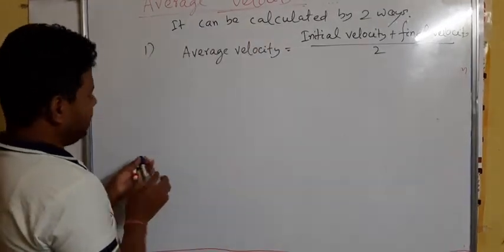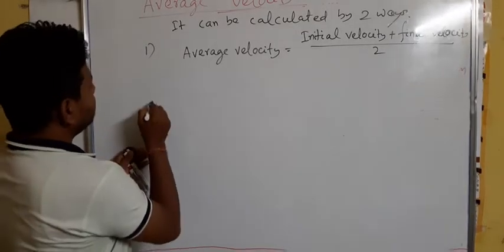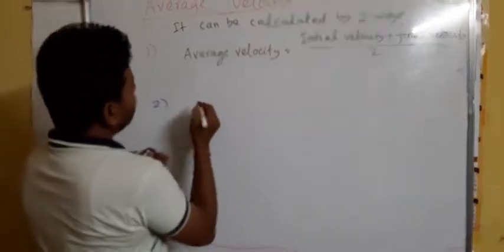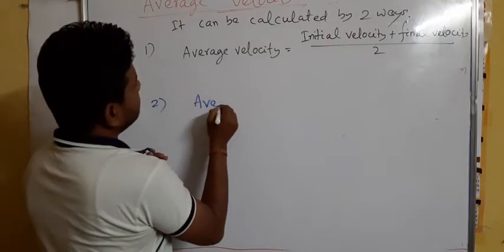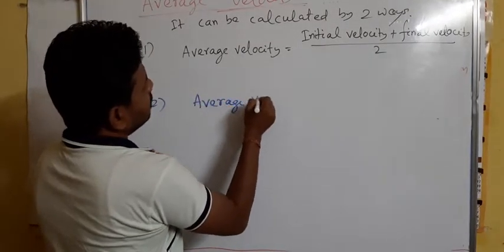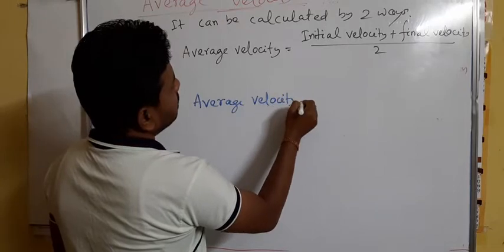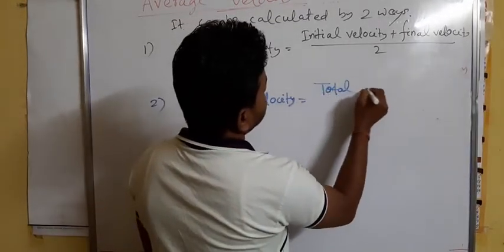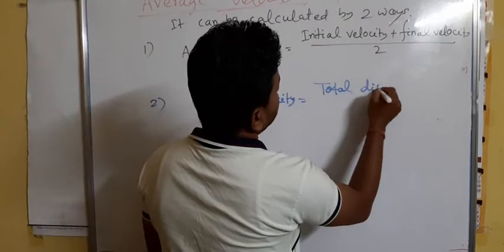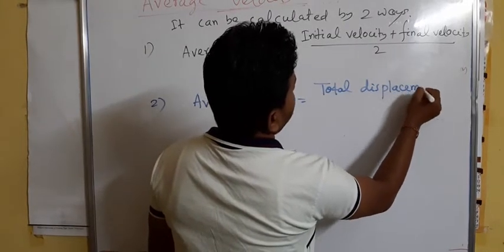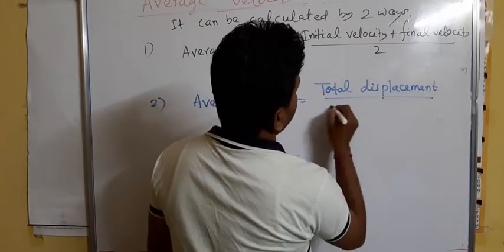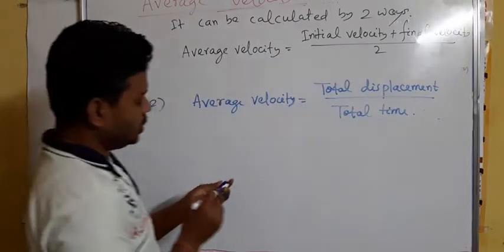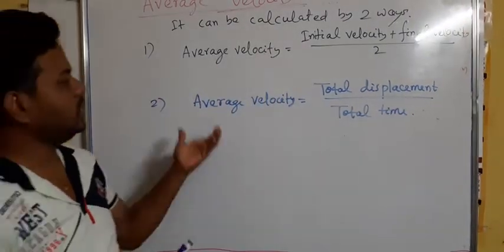The second formula or second way of calculating average velocity is like this: average velocity equals total displacement by total time.